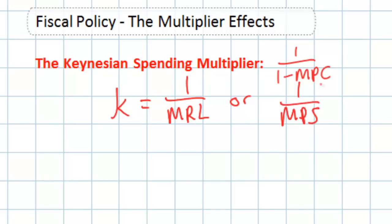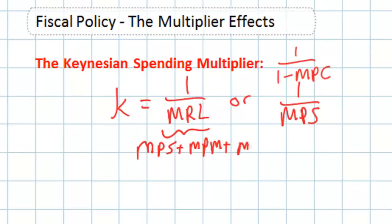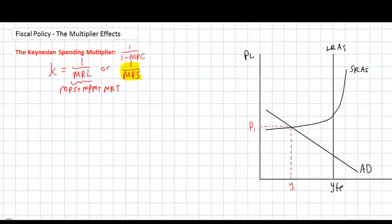For IB economics students the marginal rate of leakage includes the marginal propensity to save, the marginal propensity to import, and the marginal rate of taxation. If you're an AP economics student you are expected to know the simple Keynesian spending multiplier, which is one divided by the marginal propensity to save.